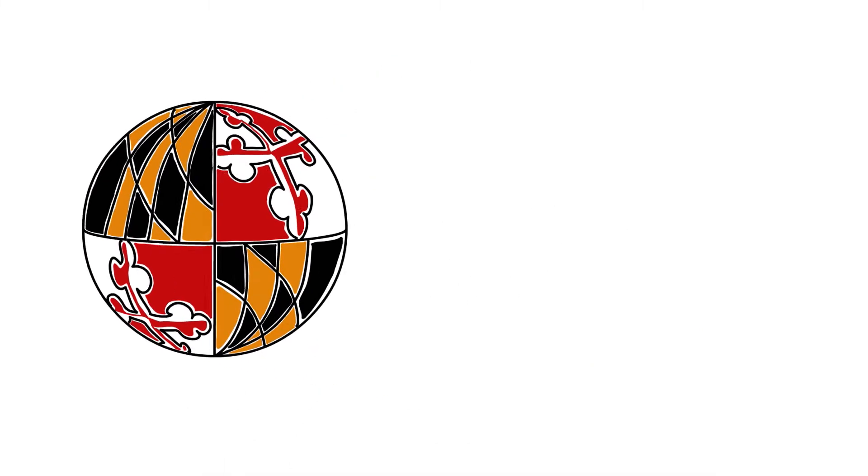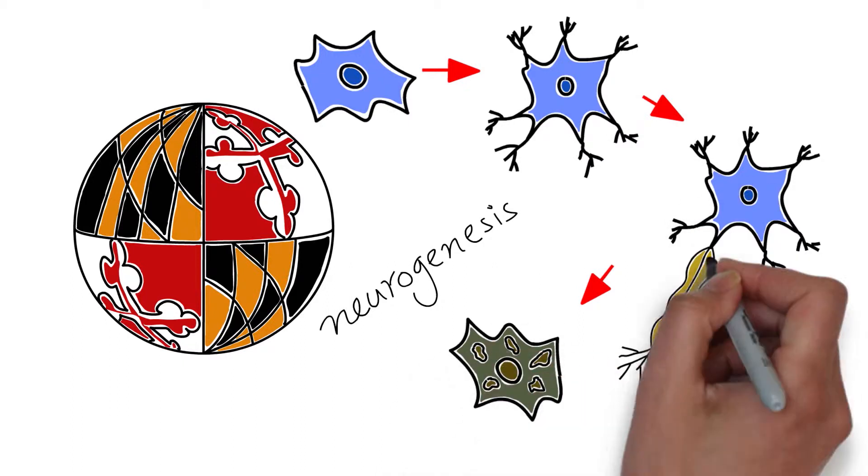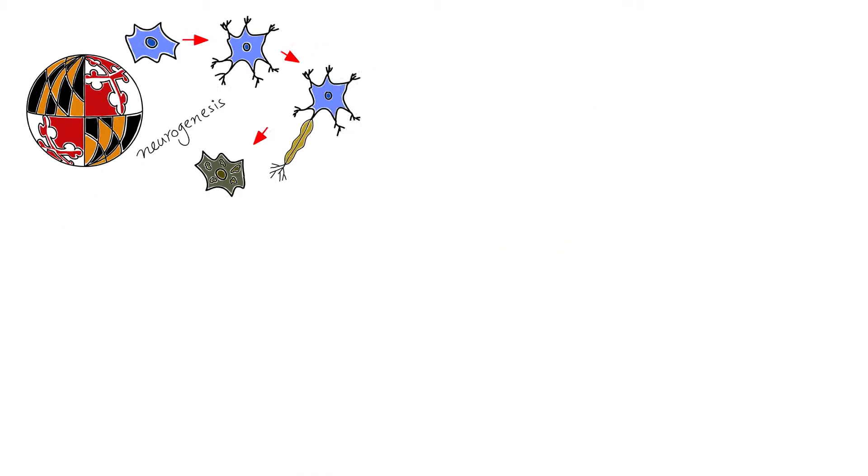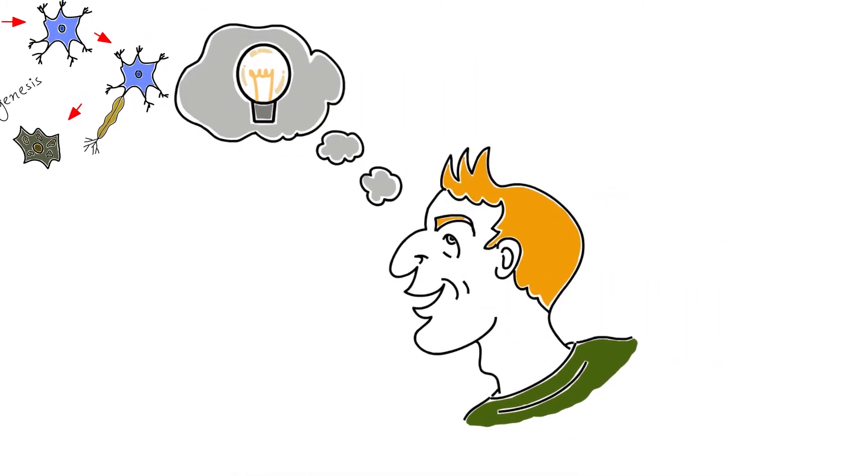Researchers at the University of Maryland found that regular sexual activity not only allows for neurogenesis—the creation of new neurons in the brain—but also improves cognitive functions, potentially helping people think more clearly.